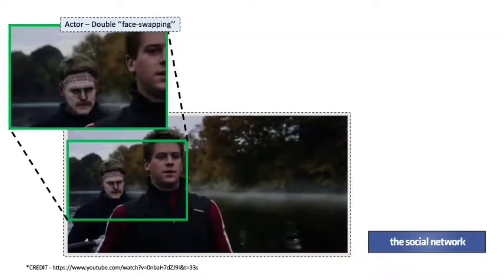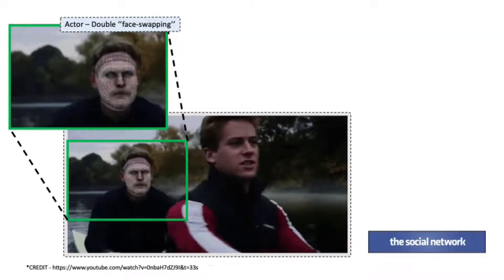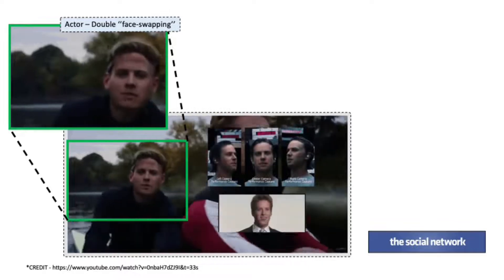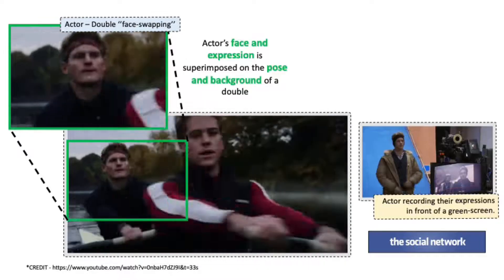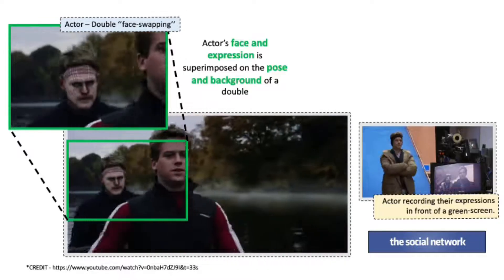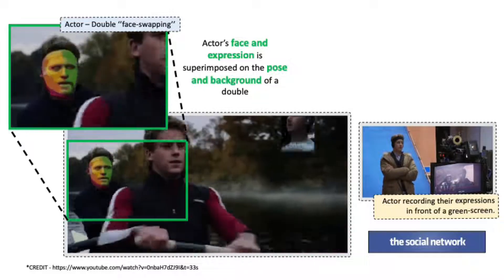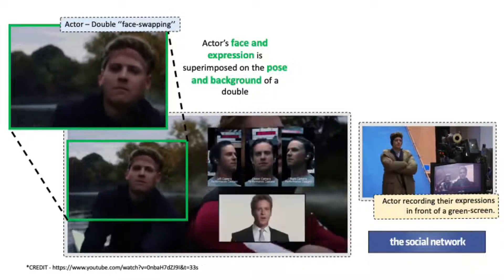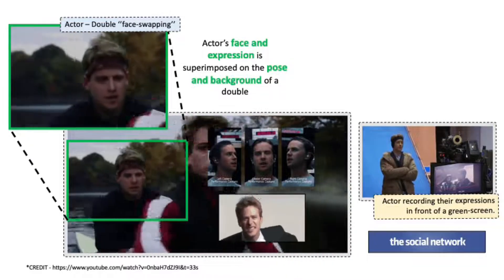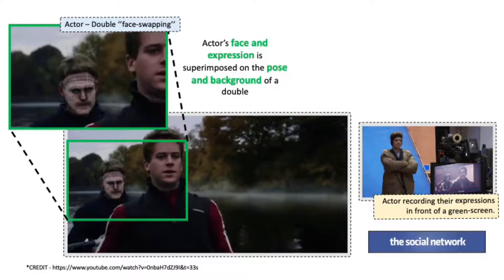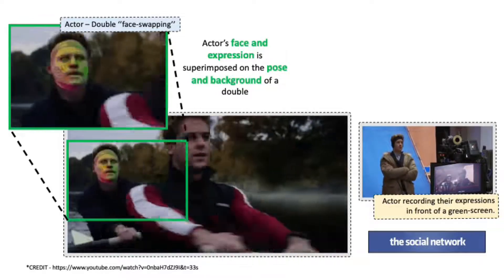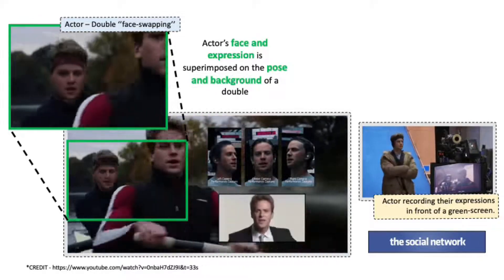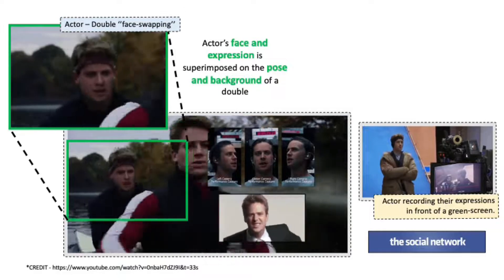At the time of the movie shoot, in all of the scenes with the twin brothers, one of the brothers was always a body double. Later, Armie Hammer, the actor, recorded the dialogues for the brother played by the double in front of a green screen. The scenes are then later edited in post-production where the face and the expressions of the main actor are superimposed on the face of the body double.